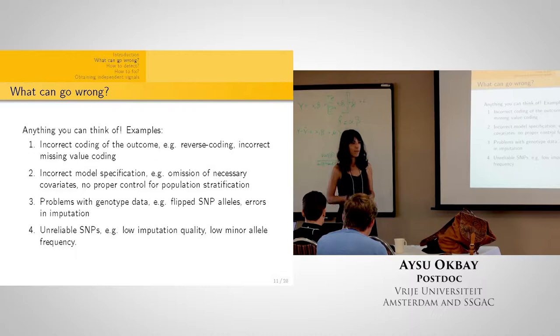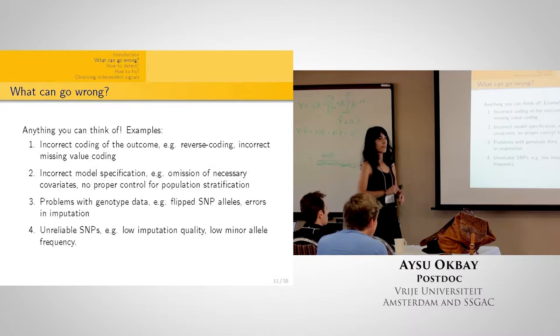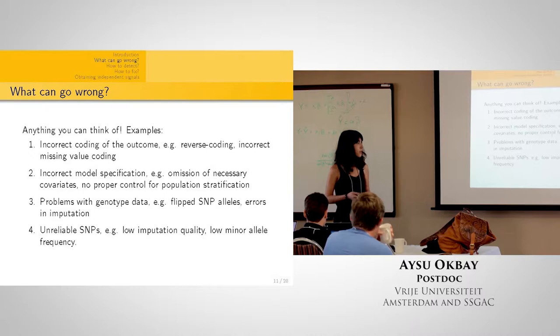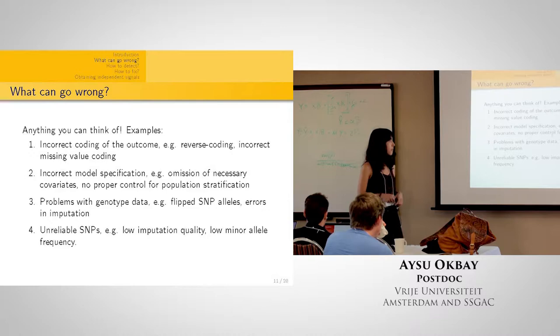There can also be problems with genotype data or imputation — alleles could be flipped, or the effect could be reported for the wrong allele, or there could be other errors during imputation. You also want to drop unreliable SNPs, such as those with very low minor allele frequencies where models can't be estimated reliably, or SNPs with low imputation quality where there's a lot of uncertainty about the genotype.